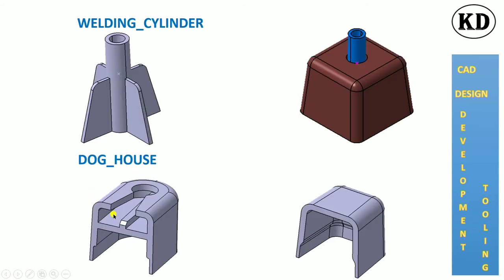The next fixation type is the welding cylinder, which will provide fixation for more than two or three parts. By the welding cylinder we provide the fixation. It is also called a heat stake.